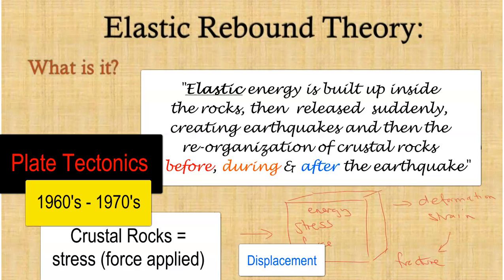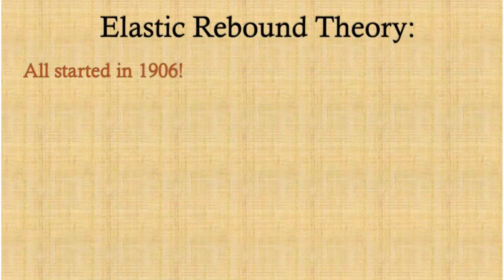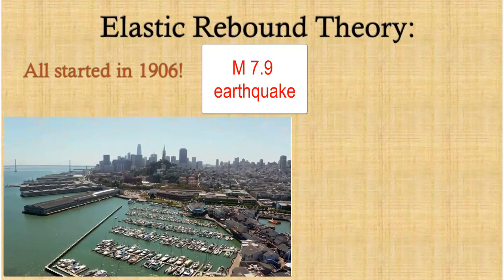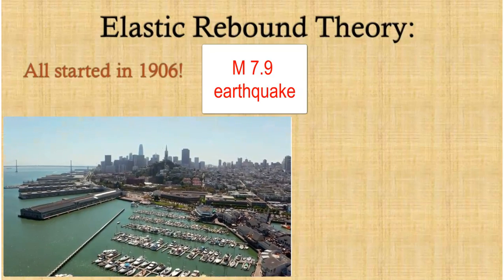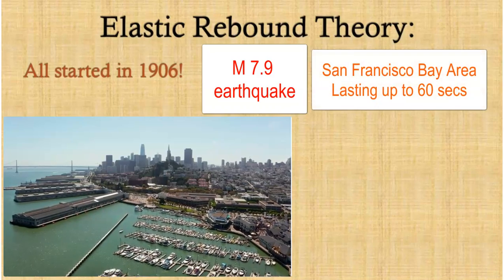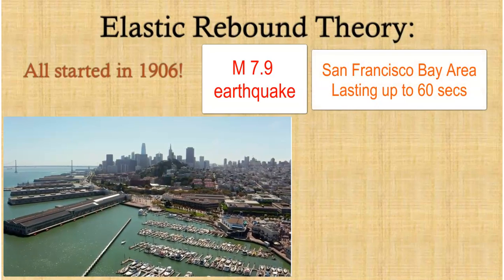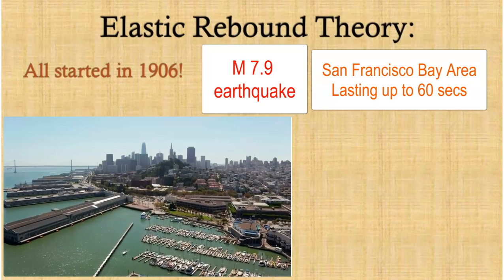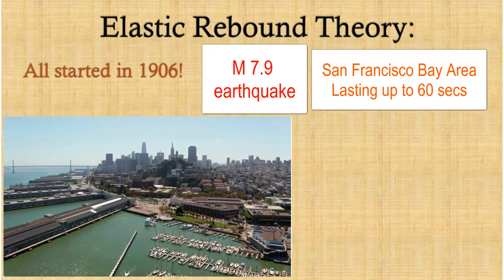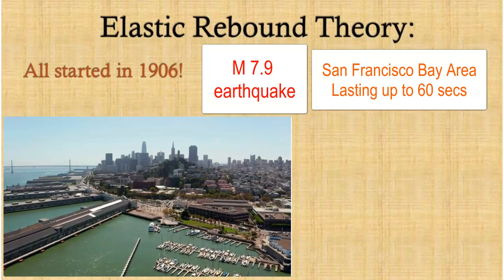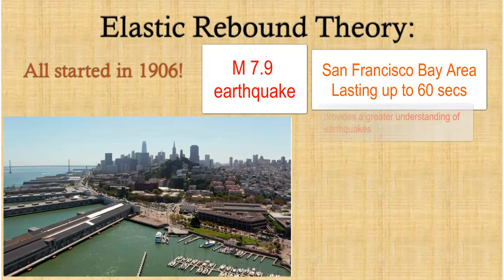Elastic rebound theory is a basic theory to explain how this happens. In 1906, in California, on the northern section of the San Andreas fault line around the San Francisco Bay, there was a very large earthquake measuring 7.9 on the Richter scale. This hit the city of San Francisco and was a terrifying, basically one-minute event which completely changed the city in terms of damage, destruction, and death toll — but also transformed the science and understanding of earthquakes.